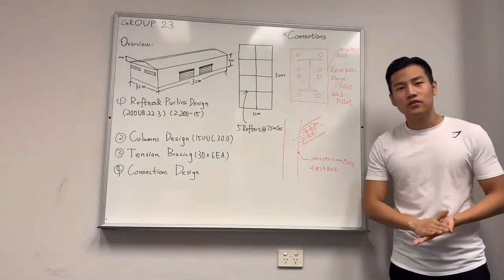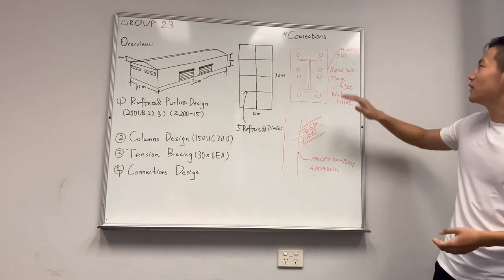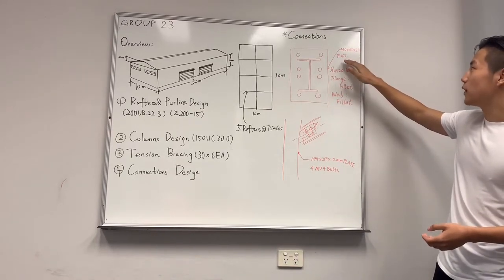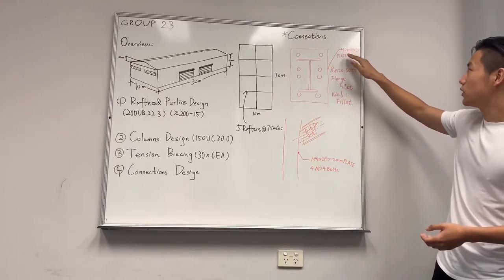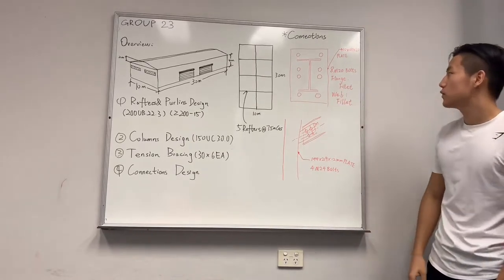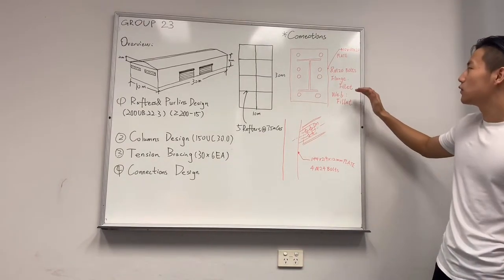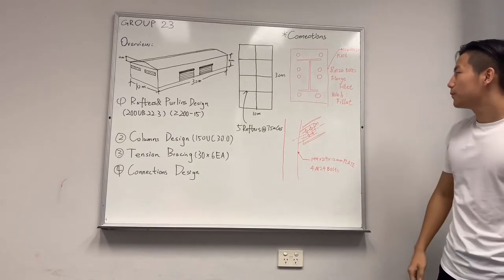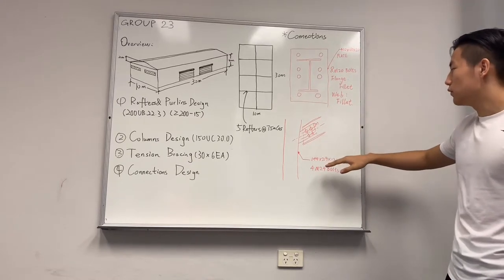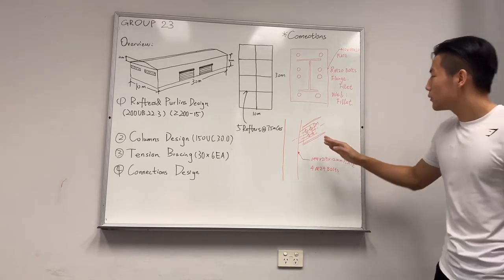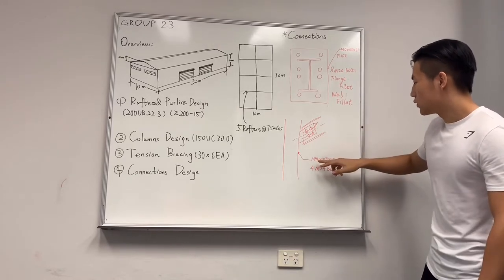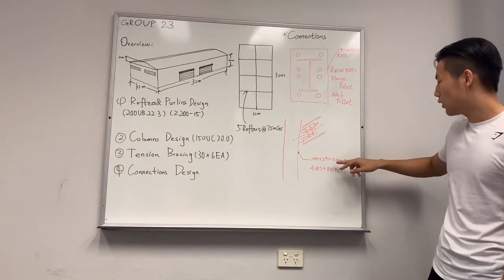Hi everyone, I'm Aaron, and I'm going to introduce the connections of our design. Firstly, we chose the apex moment design for the rafter to rafter, and we used this plate. It was 410 times 120 times 20 plate, and it was made of 8 M20 bolts. And as to the welds, we used the field welds for both flange and web beams. This design is given by the Space Gass, and as to the column to the rafter design, we used the web-site connections. The web-site connections is made of 4 M24 bolts, and 144 times 219 times 12 mm plate.